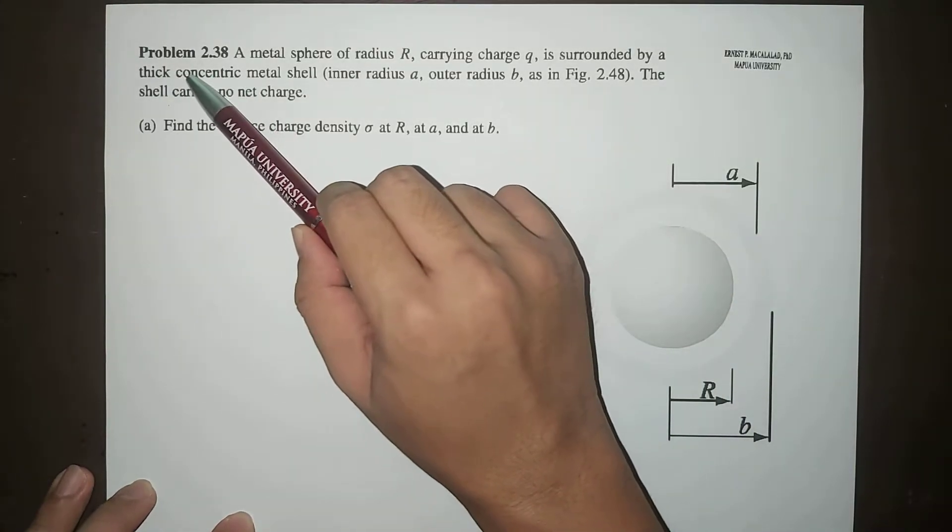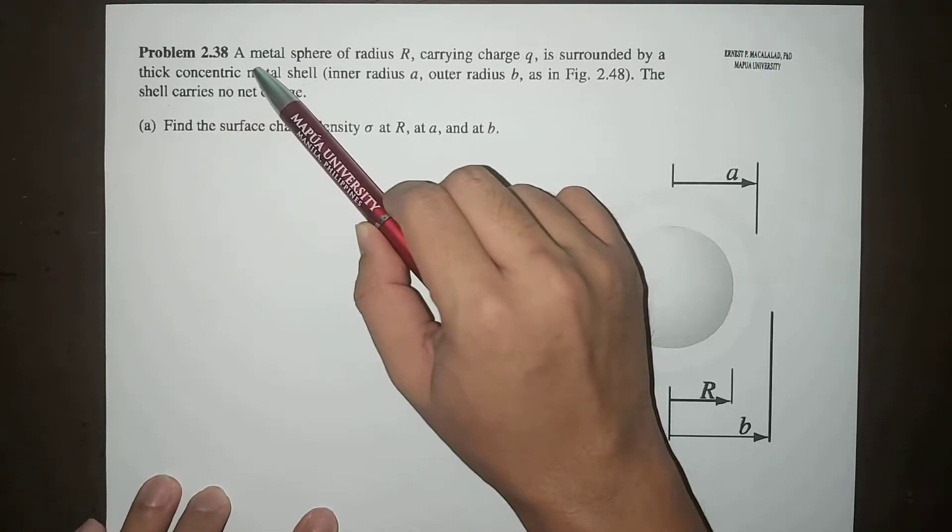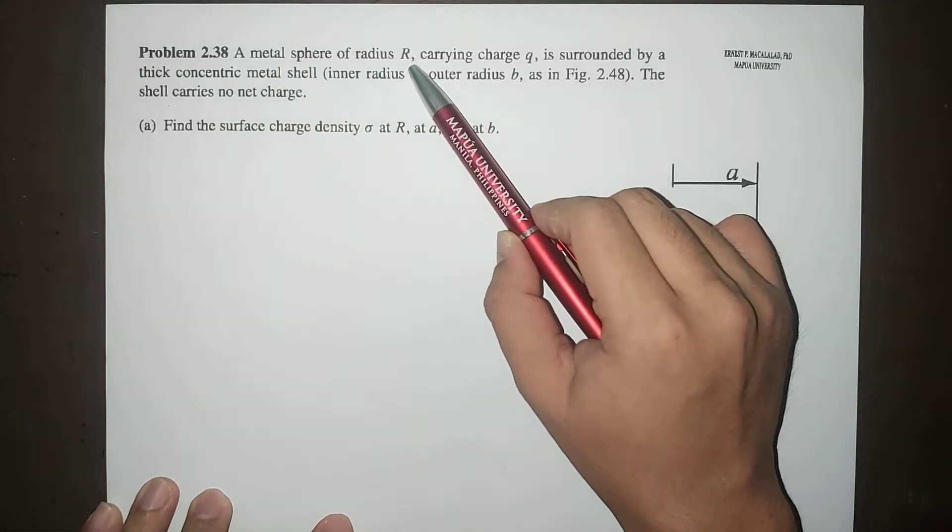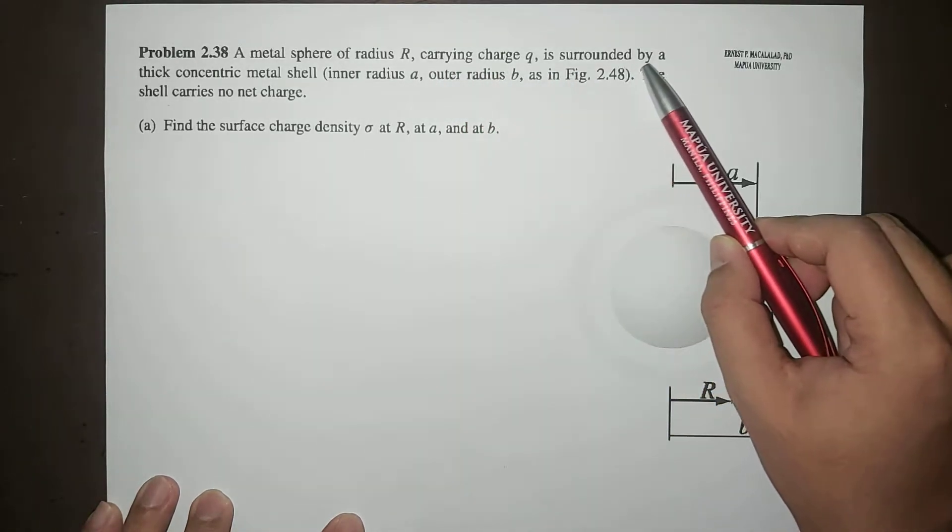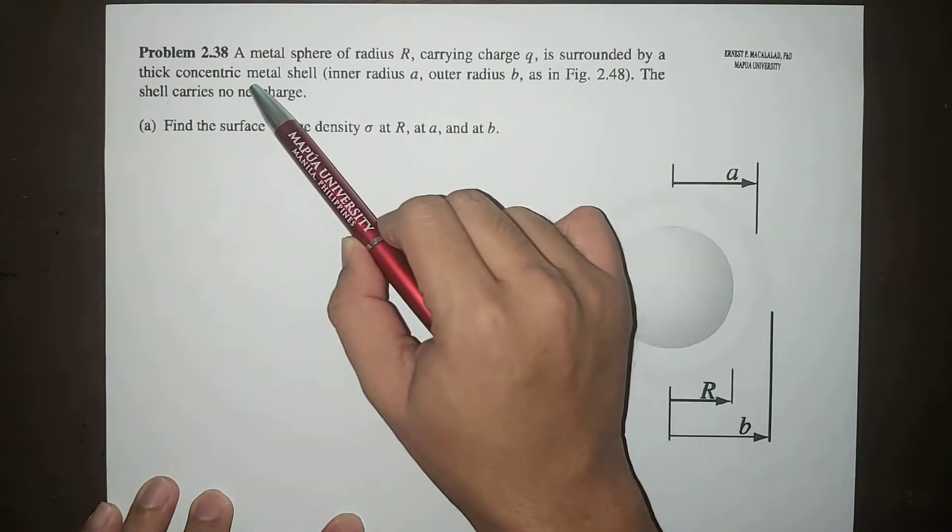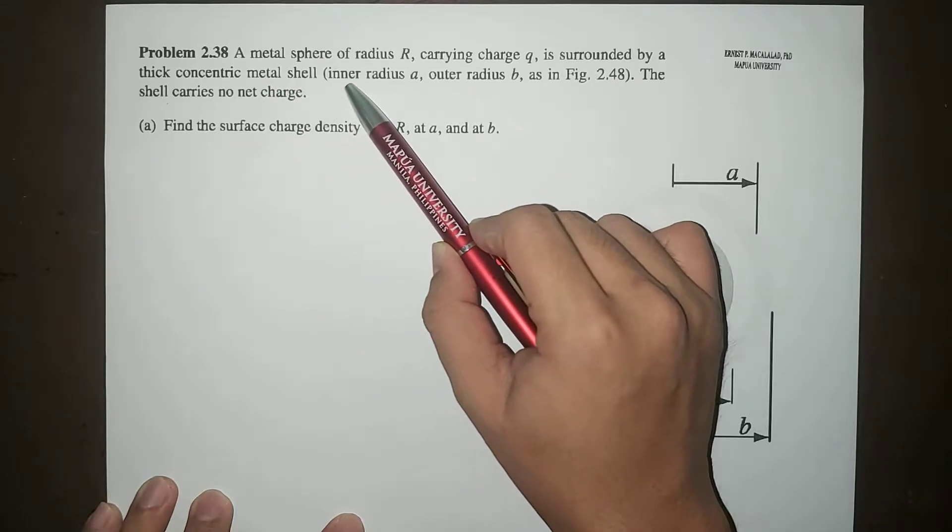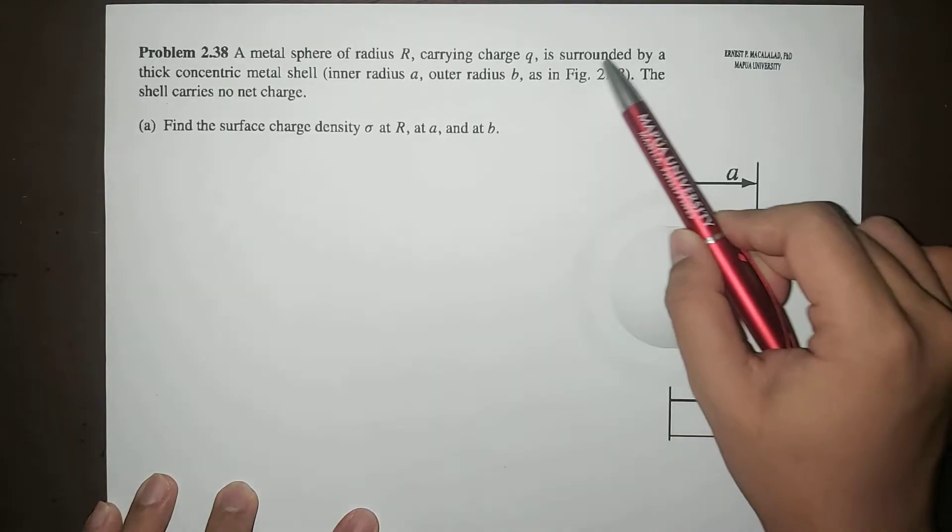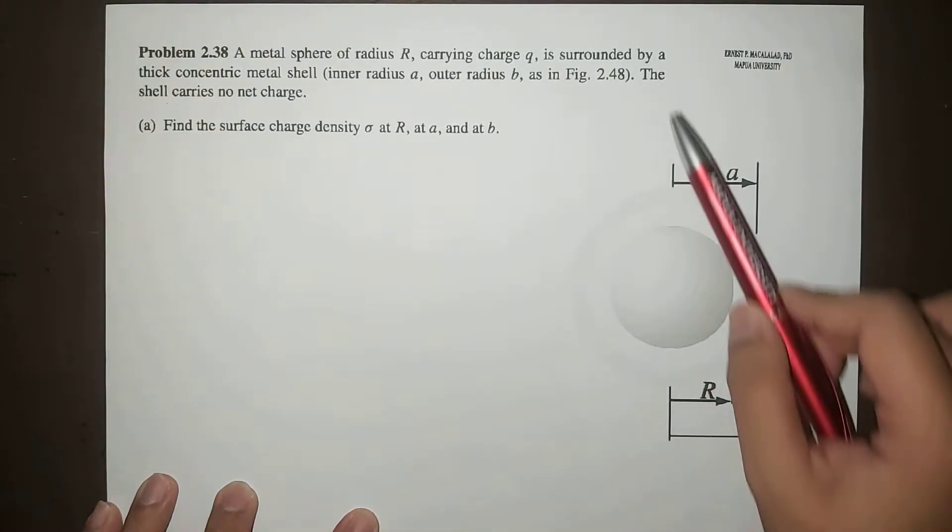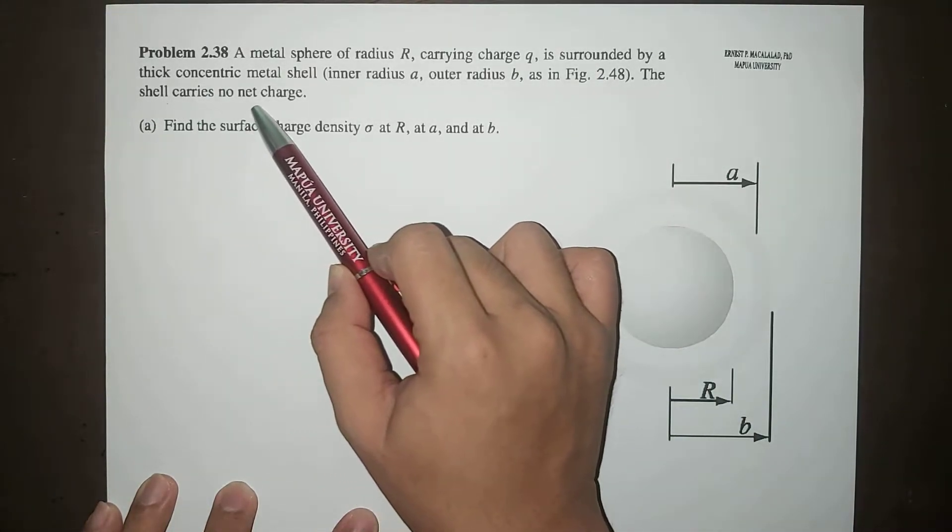The problem reads: A metal sphere of radius R, carrying charge Q, is surrounded by a thick concentric metal shell of inner radius A and outer radius B, as shown in the figure. The shell carries no net charge.